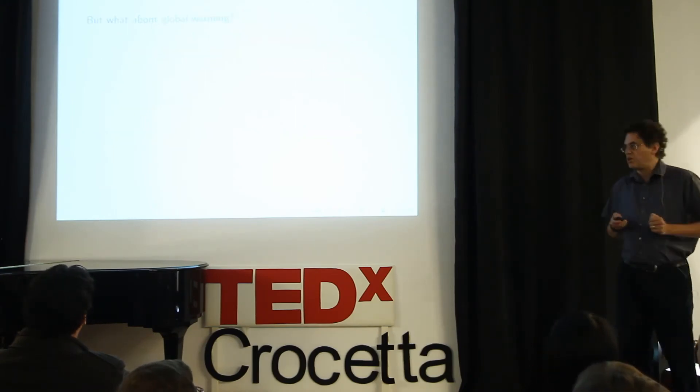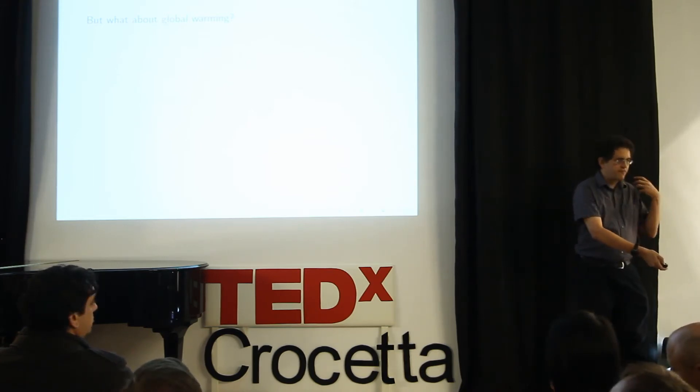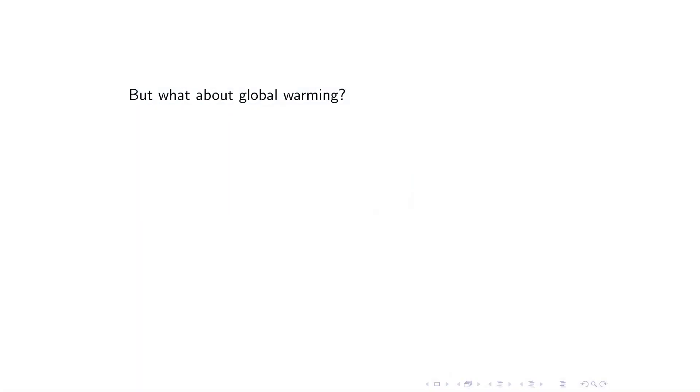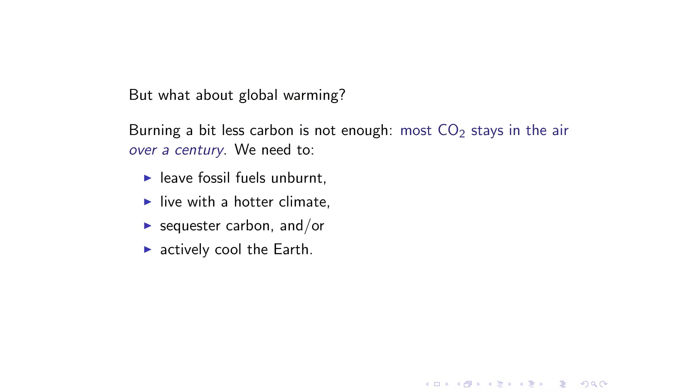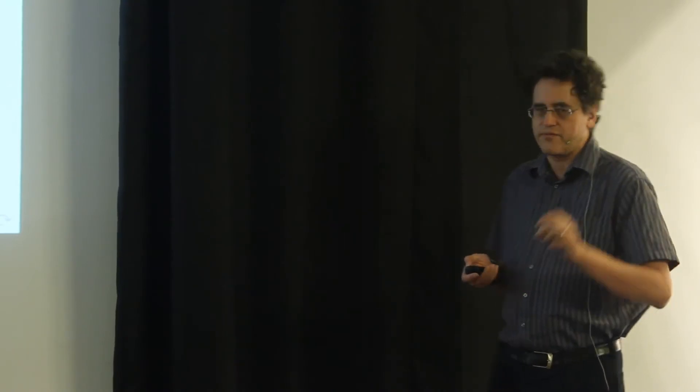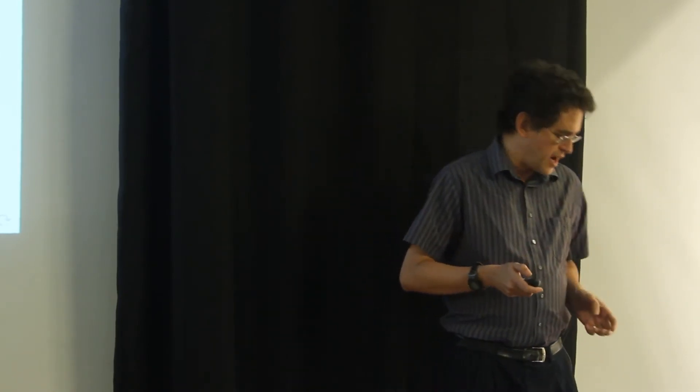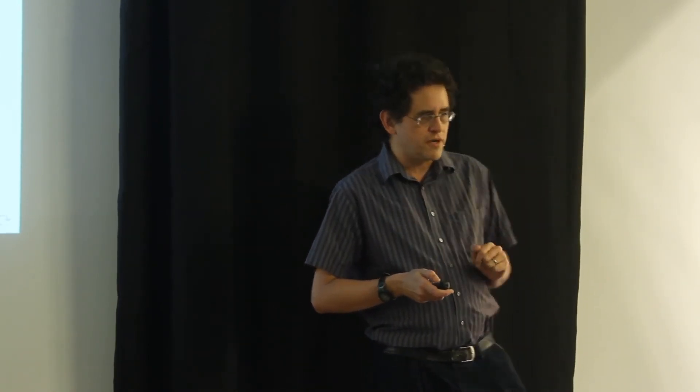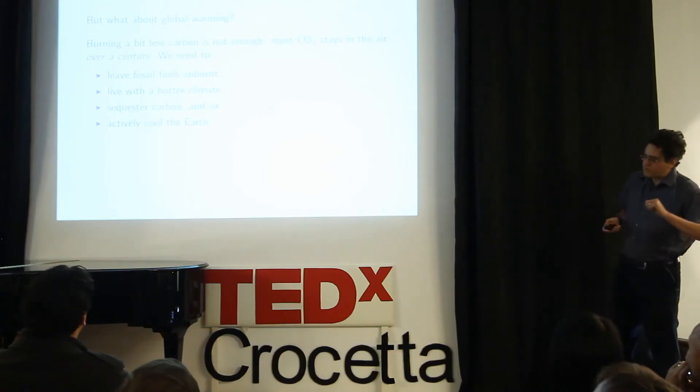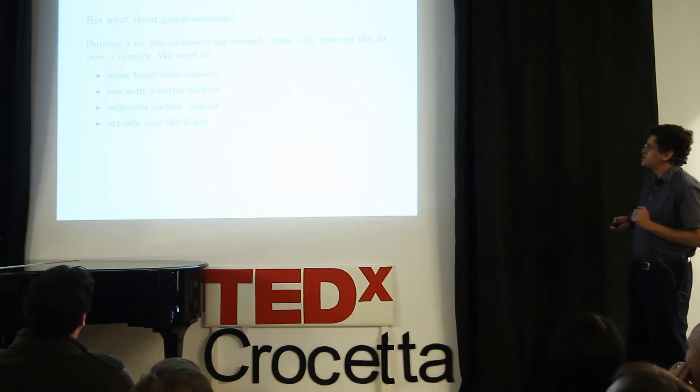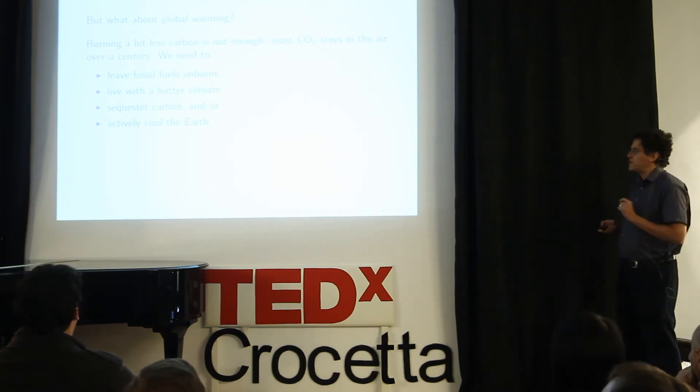So people talk a lot about global warming. Let me give you a little bit of ideas about what we could do about that. So the key thing to know is that burning a little bit less carbon is not enough. Turning down your thermostat or buying a car with better gas mileage, they're not going to be good enough. They're good things to do. I'm not denying that. But they're not the solution. The problem is that most carbon dioxide stays in the air for hundreds of years or even thousands of years. So if you put a little less carbon dioxide into the air, you're slowing the process of global warming, but you're not stopping it. So to really stop it, we would need to leave fossil fuels unburnt.